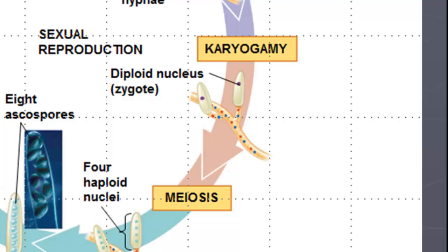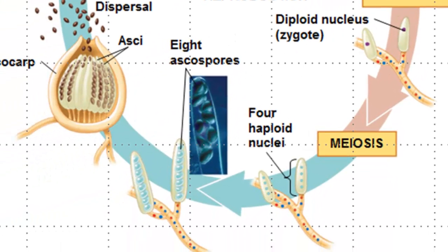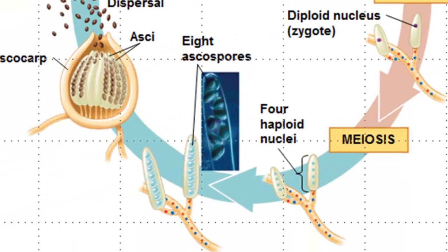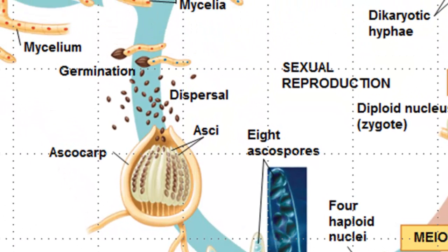Each diploid nucleus will then divide by meiosis, yielding four haploid nuclei. Each haploid nucleus will then divide once by mitosis, yielding eight nuclei. Cell walls and plasma membranes are going to develop around these nuclei forming ascospores. The ascospores are then discharged forcibly from the asci through an opening in the ascocarp. Germinating ascospores give rise to new mycelia and the cycle continues.